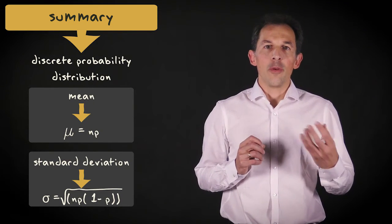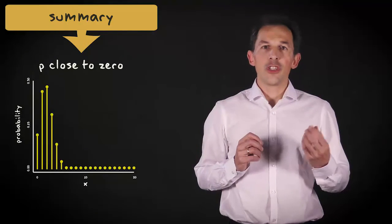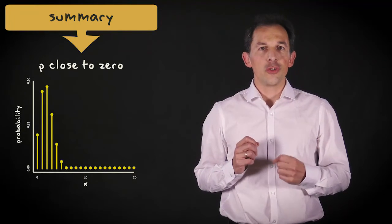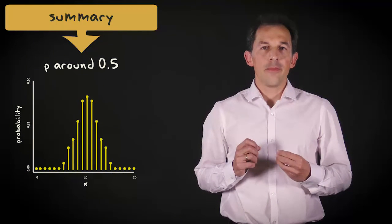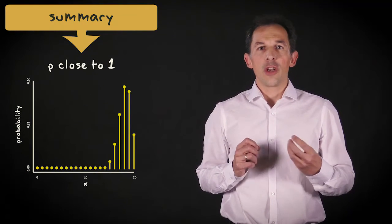The shape of the binomial distribution varies from right skewed when the value of p is close to 0, to symmetric when p is around 0.5, and left skewed when p is close to 1.